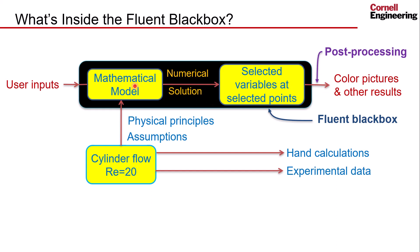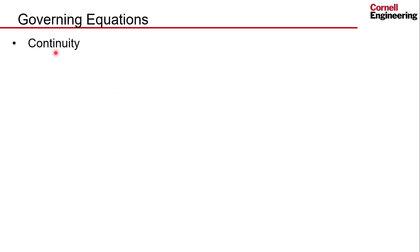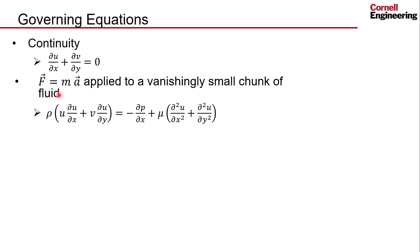Let's take a look at the mathematical model first, which are governing equations and boundary conditions. The governing equations: we have the 2D version of continuity for laminar flow, and then we have F equals ma applied to a vanishingly small chunk of fluid, the Navier-Stokes equations in the x direction and in the y direction.